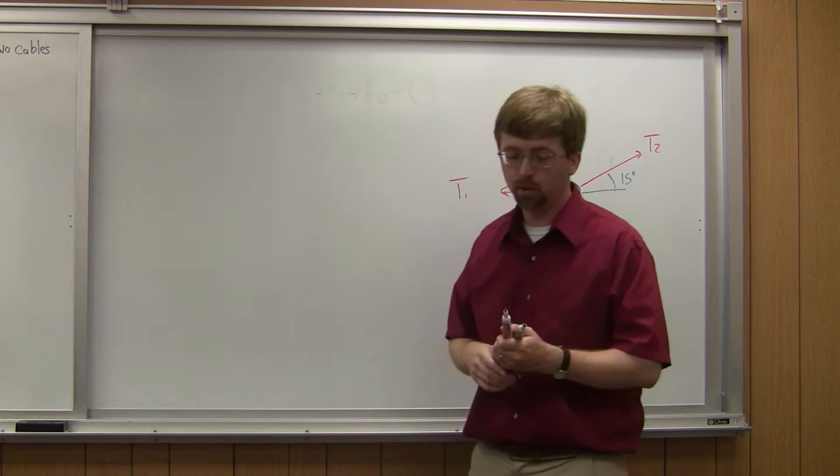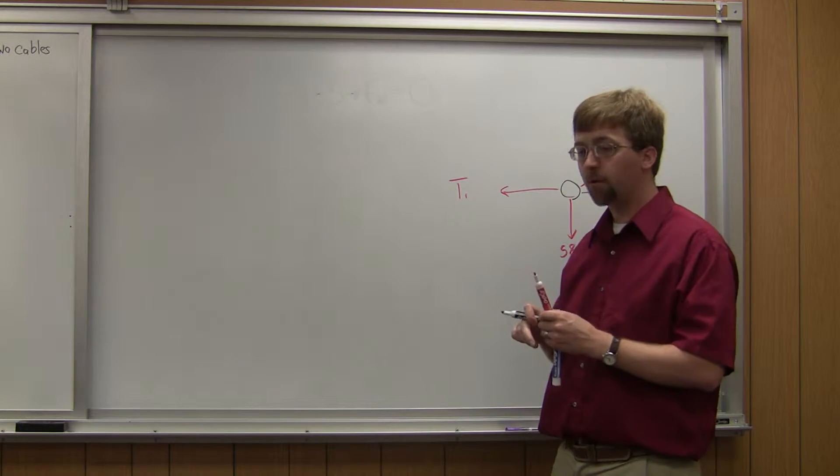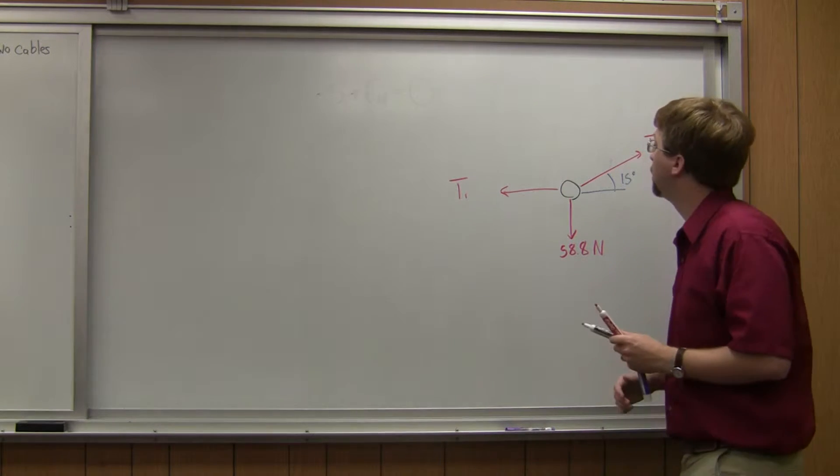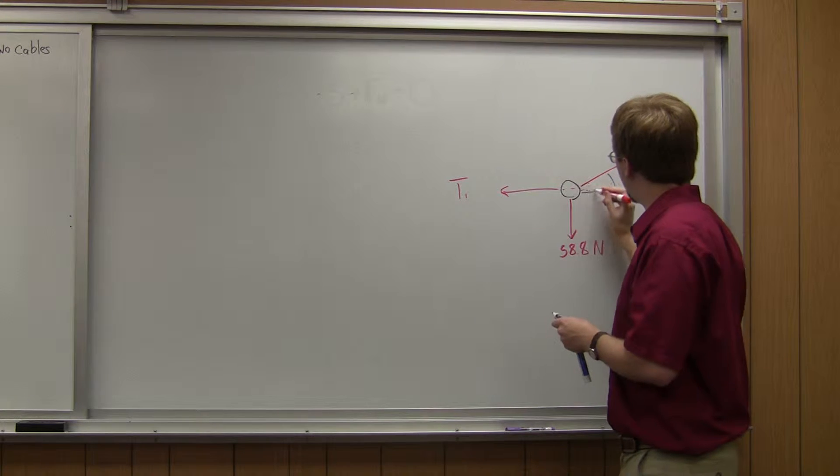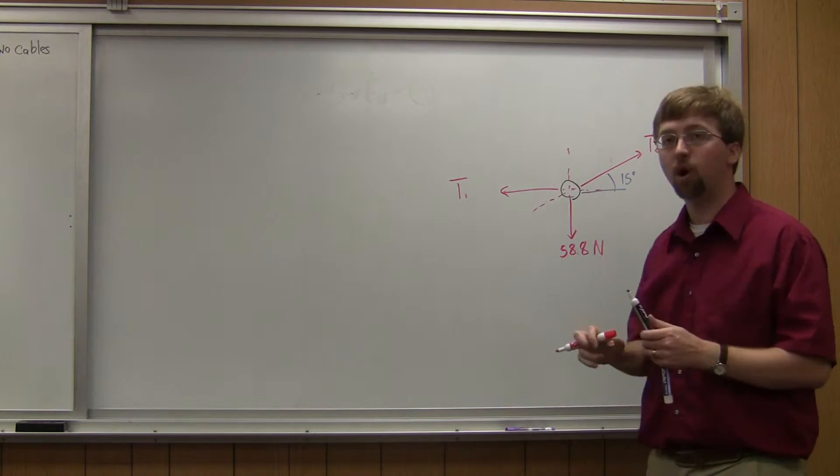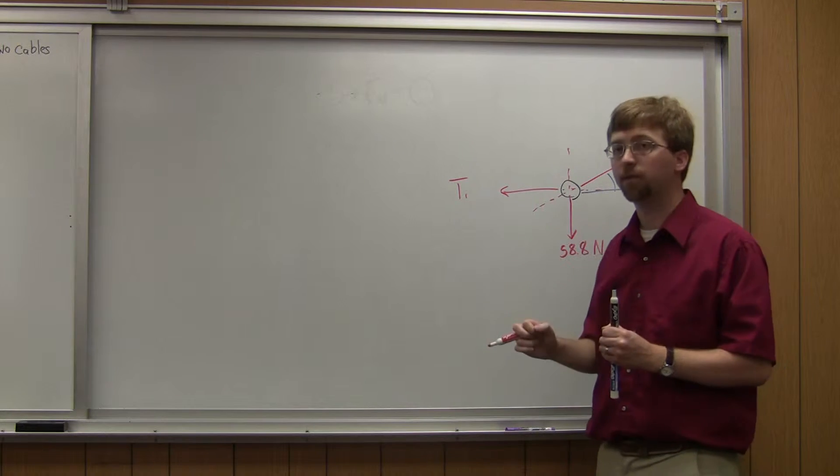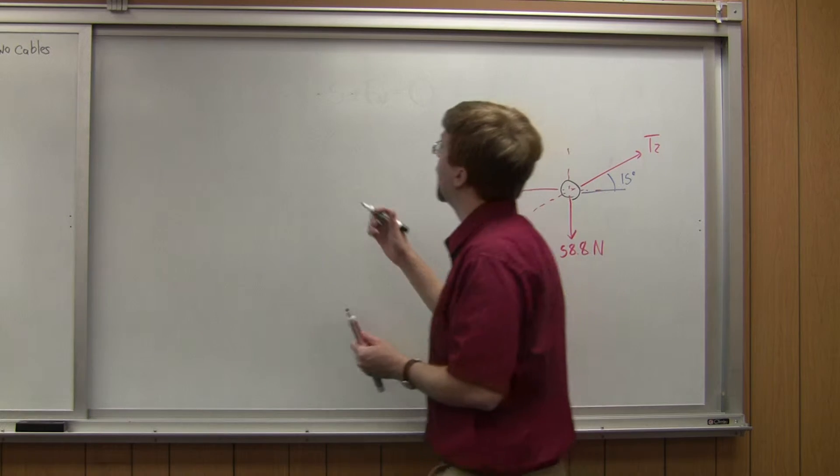Next thing I need to do is draw out my equations of equilibrium. So I'm going to have sum of forces in the x and sum of forces in the y. This is a particle problem. Everything is going through a single point like so. So that lets me know that I don't have any moments in this problem. I've just got forces in the x and forces in the y.